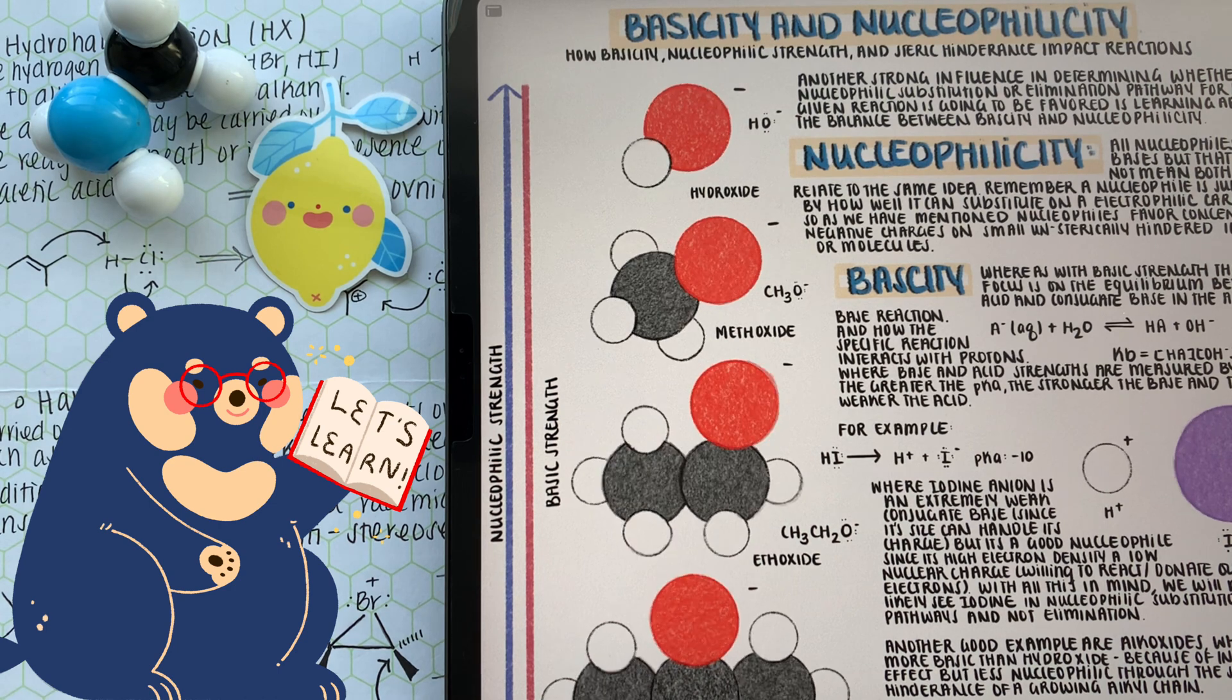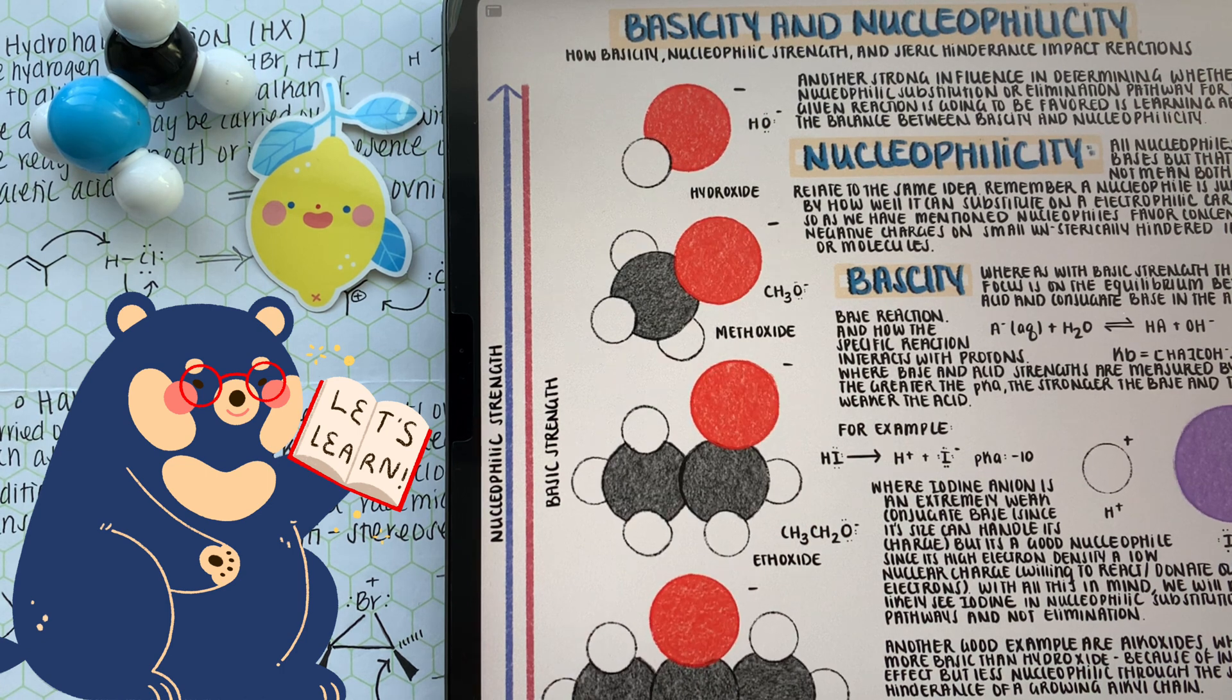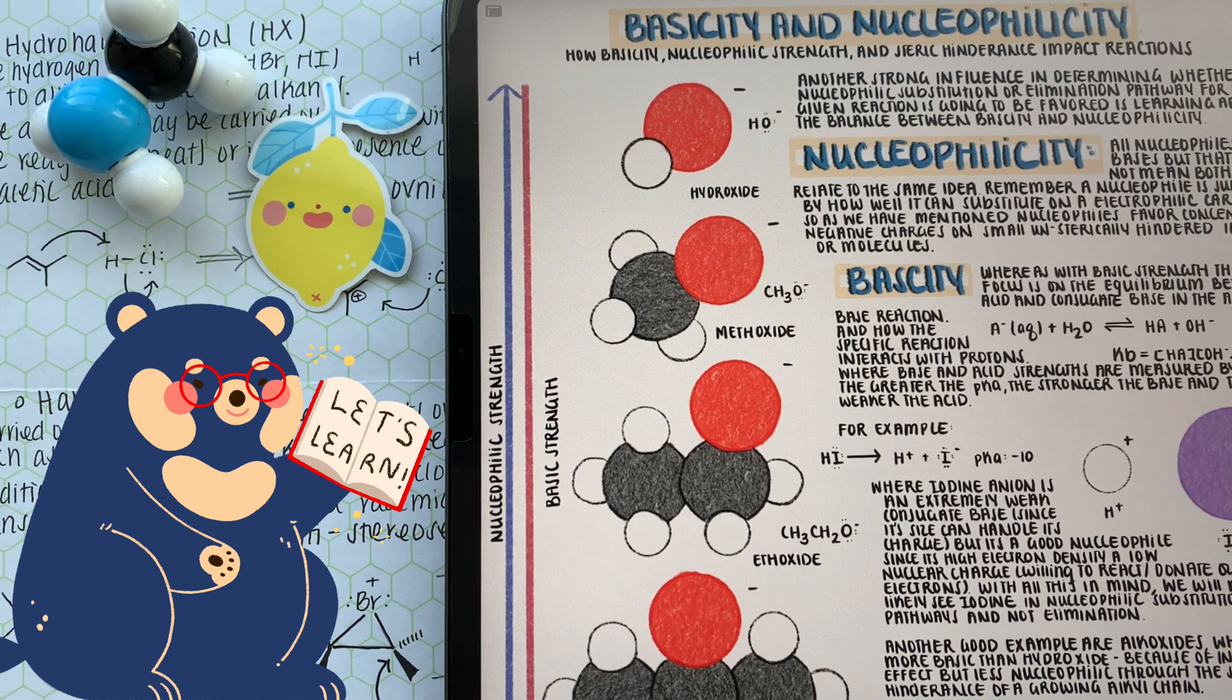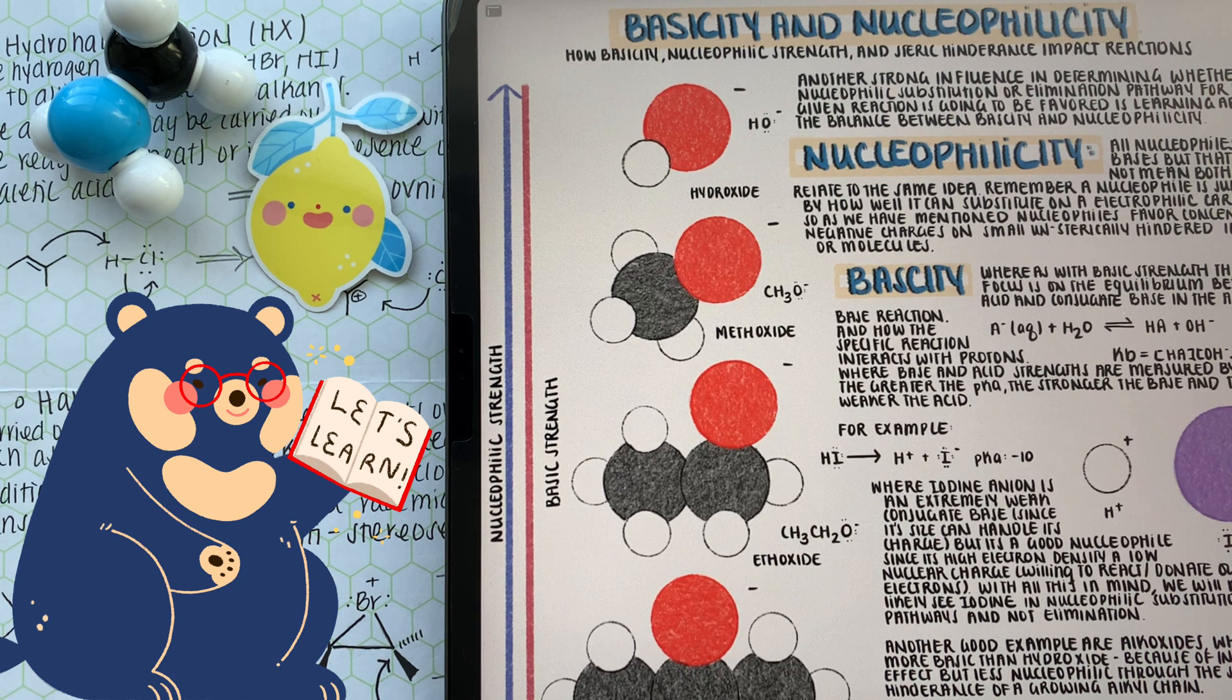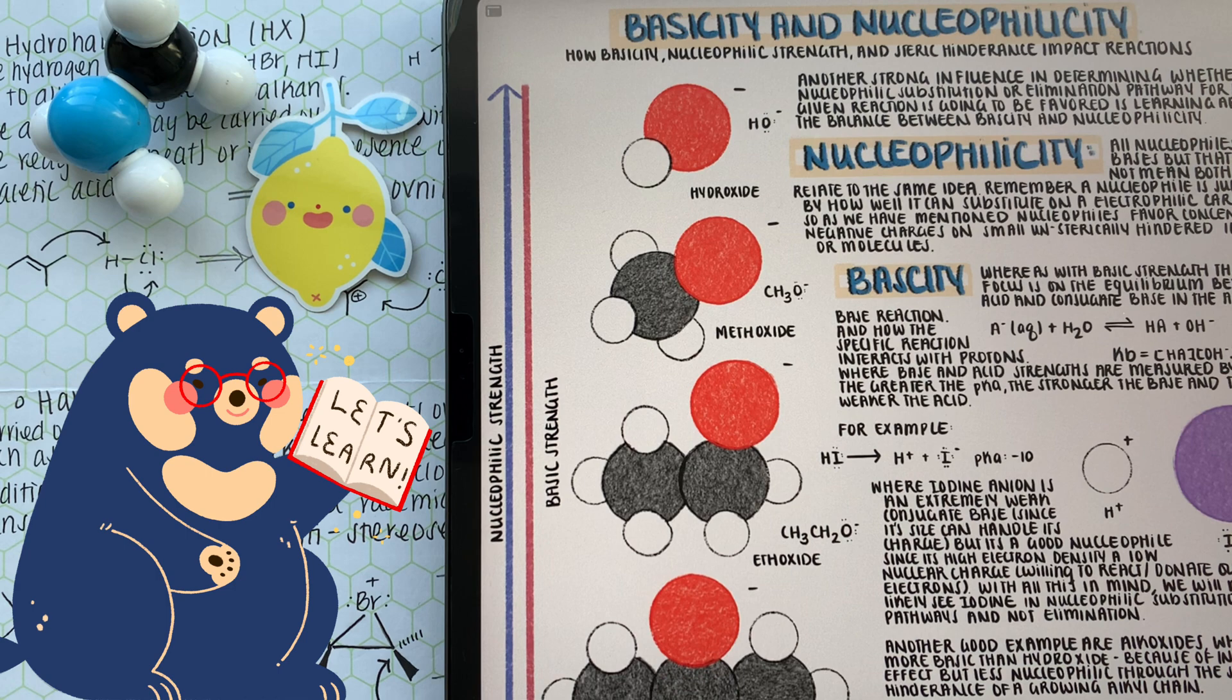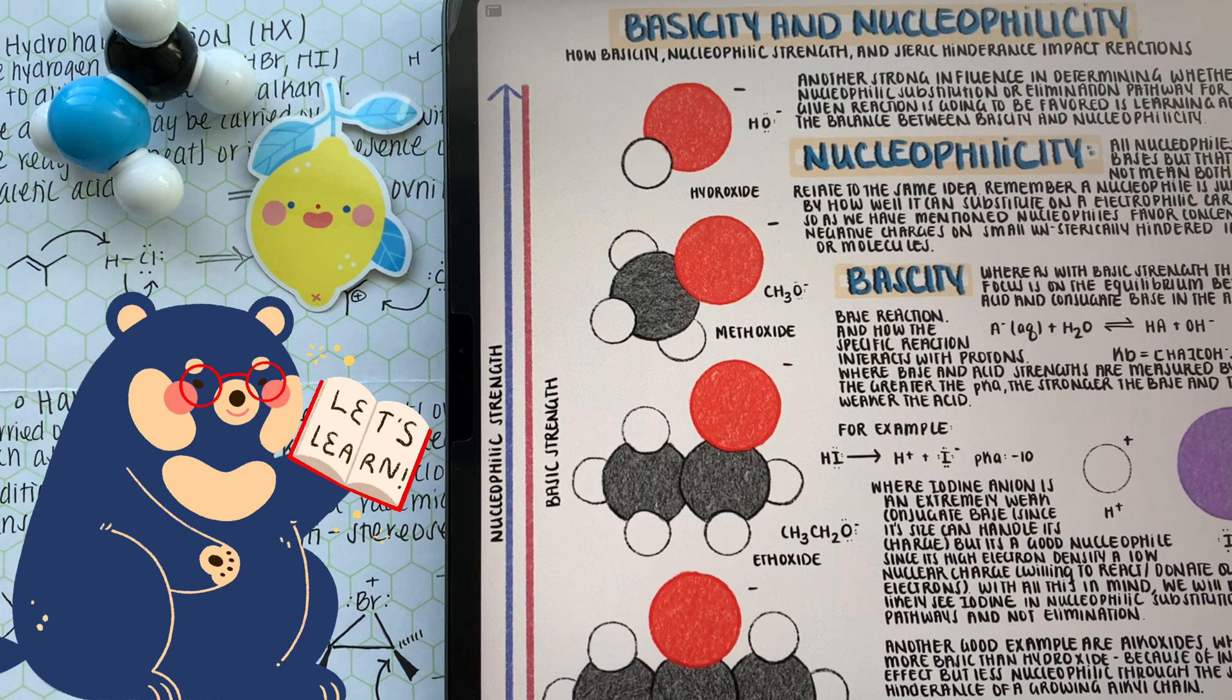A good example is to look at oxides. As we grow the alkyl chains of the oxides, we're increasing their basicity, but decreasing their nucleophilic strength. This is because of the inductive effect. An oxide with a growing alkyl chain grows that negative charge's strength because of the inductive effect pooling electron density off of the R groups. So if we had a hydroxide, we might lean more closer to nucleophilic substitution than elimination.